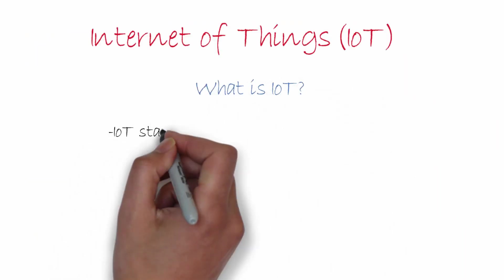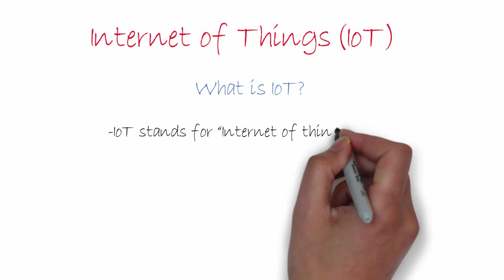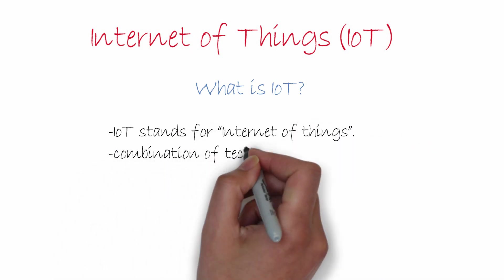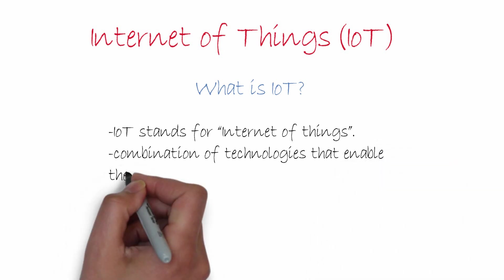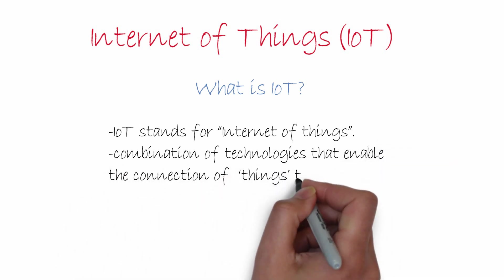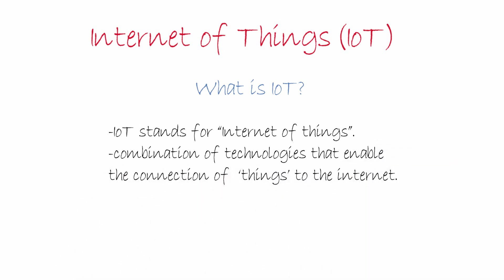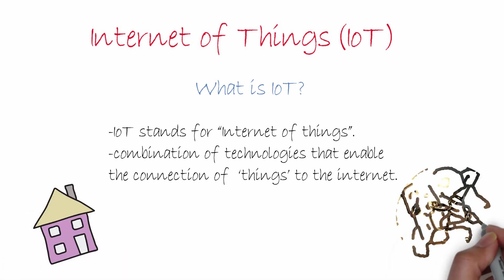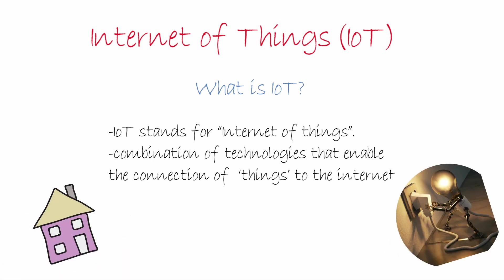IoT stands for Internet of Things. It is a combination of technologies that enables the connection of everyday things or objects to the Internet. Examples of things can include home appliances like lights, microwaves, refrigerators and washing machines. By the end of this video, you should feel right at home with Internet of Things.